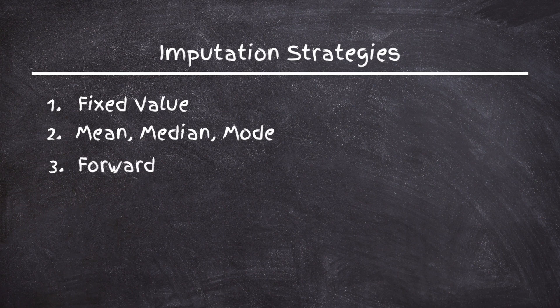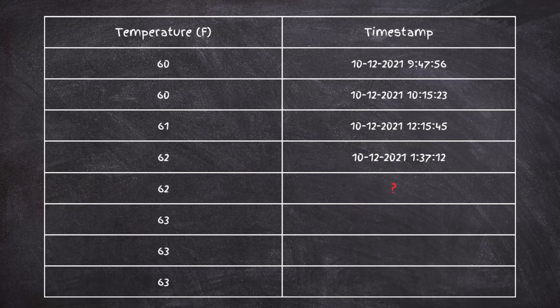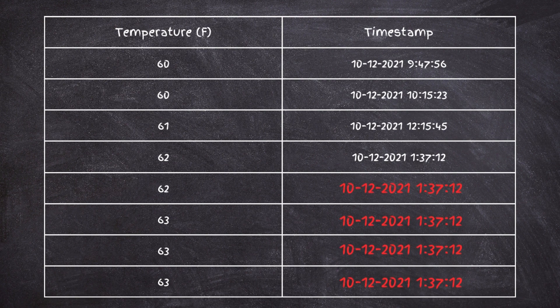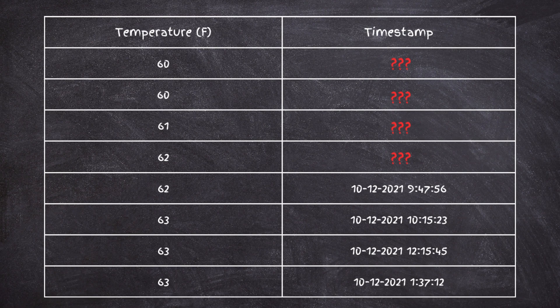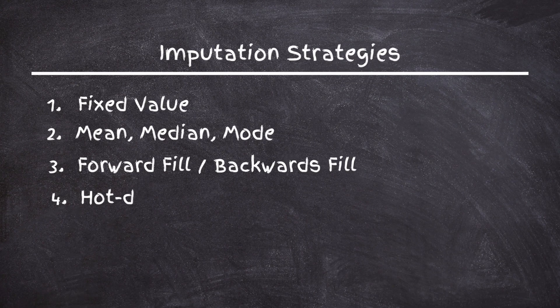You can also use forward fill or backward fill, which generally works for time series or ordered data. With forward fill, you take the last available timestamp and fill in the subsequent missing rows with that value. With backward fill, you do the opposite — you take a known value and use it to fill in the rows before it.